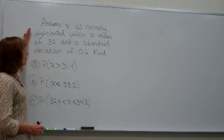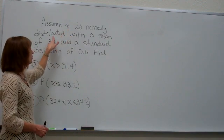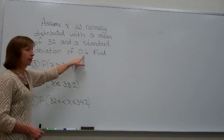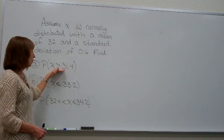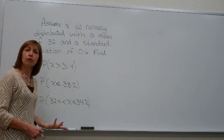Now when we have our original setup that we have our random variable as normally distributed with a mean of 32 and a standard deviation of 0.6, and they want us to find these probabilities, we can actually find them in a couple different ways.